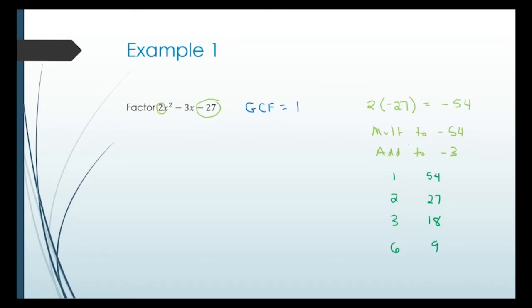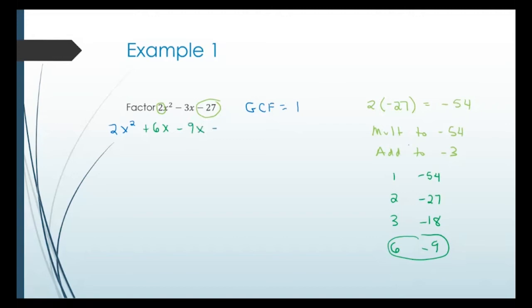Since c is negative, the biggest number gets the sign of the middle, which is negative. So our pair is 6 and negative 9 because 6 minus 9 is negative 3. Now I rewrite: the first term stays the same — 2x squared — the last term stays the same — minus 27 — but instead of minus 3x, I write plus 6x minus 9x. I'm taking a three-term expression and turning it into four terms so I can do grouping.